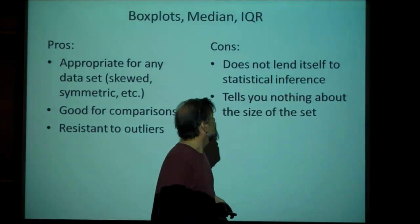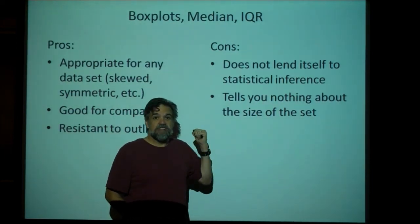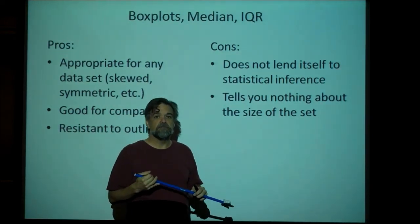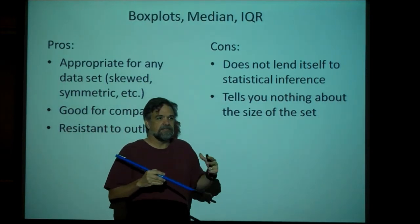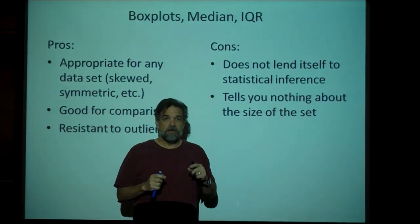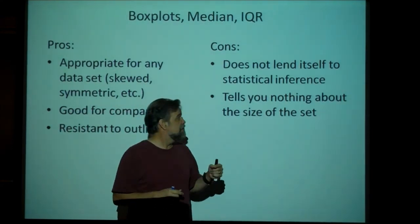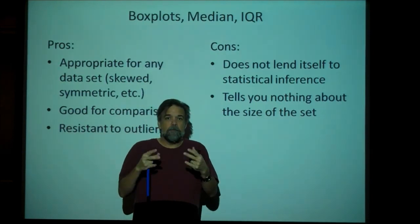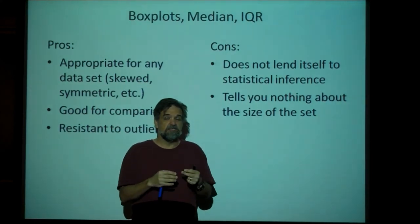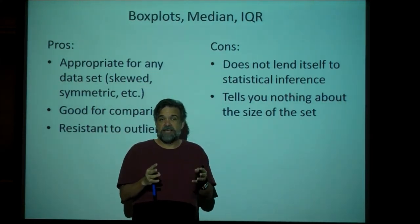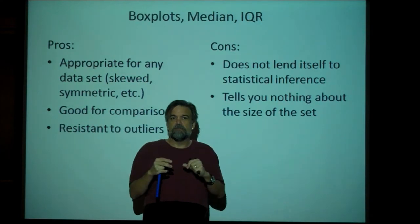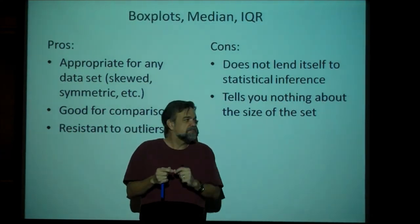Cons. Well, one big con is, these are not the measurements we're going to be using when we do statistical inference in the future. We're going to be using the mean and the standard deviation. Simply because the mathematics of these doesn't lend itself to doing inference. Another con about using a box plot, as opposed to the histogram or a dot plot or a stem plot, this doesn't tell you anything about how many data points we're looking at. When you look at a box plot, you have no idea if the size of the sample is ten or a thousand or a million. You just don't know. All you know is, where is this quarter of the data, this quarter of the data, this quarter of the data.